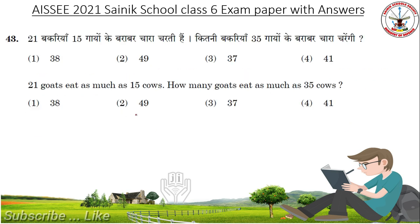21 goats eat as much as 15 cows. How many goats eat as much as 35 cows? Answer is 49.